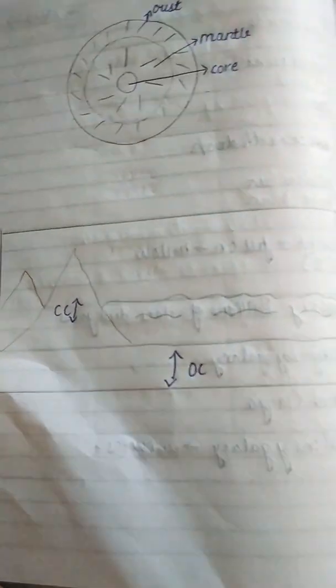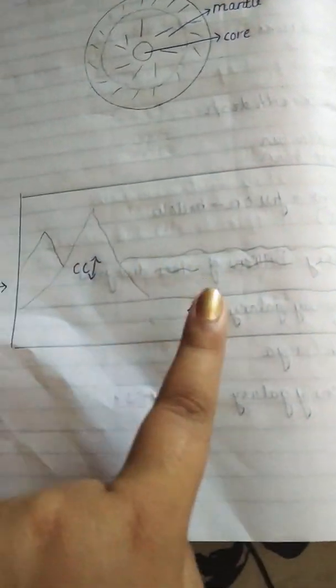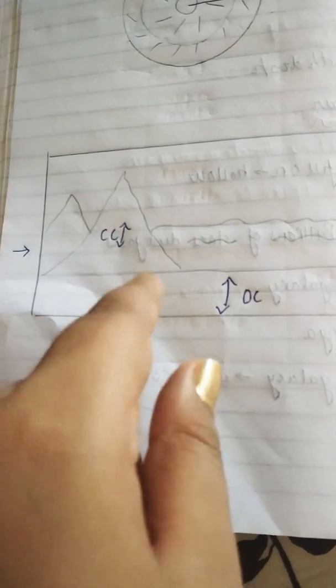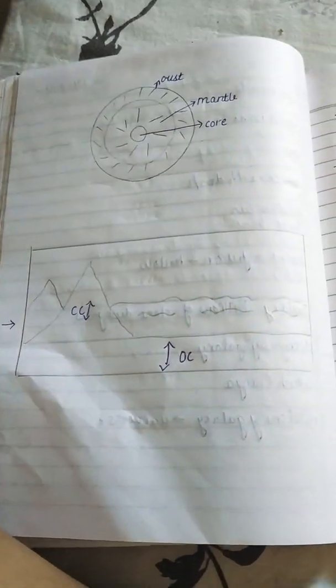And this is the diagram of continental crust and oceanic crust. Lower part is oceanic crust and the upper part is continental crust. So we move to the definitions of these.